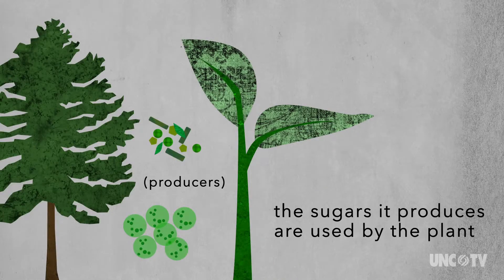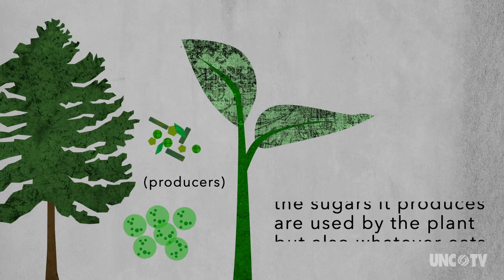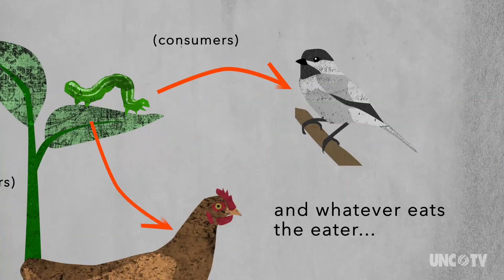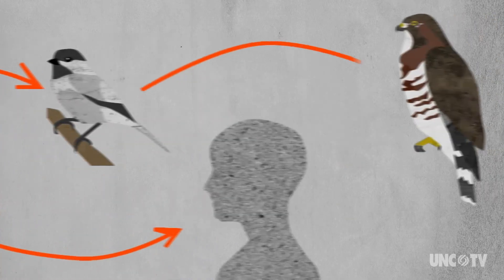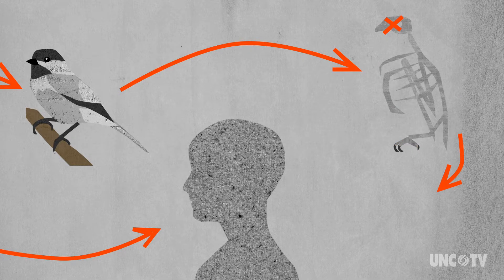The sugars it produces are not only used by the plant, but also whatever eats the plant, and then whatever eats the eater, and up and then back down the food chain until you get, well, dirt.